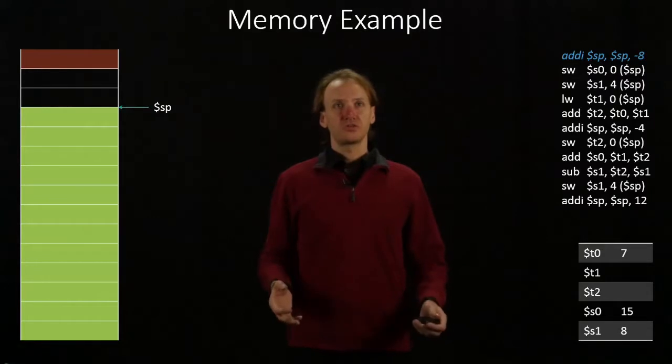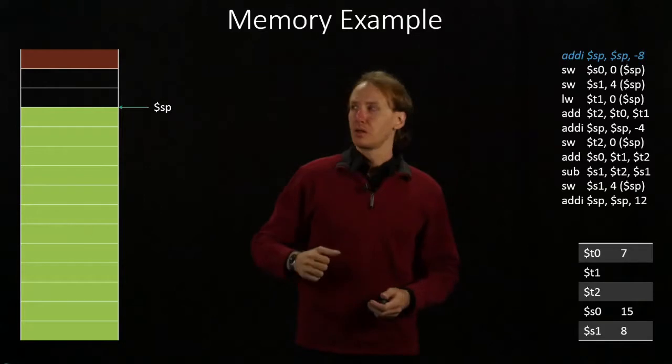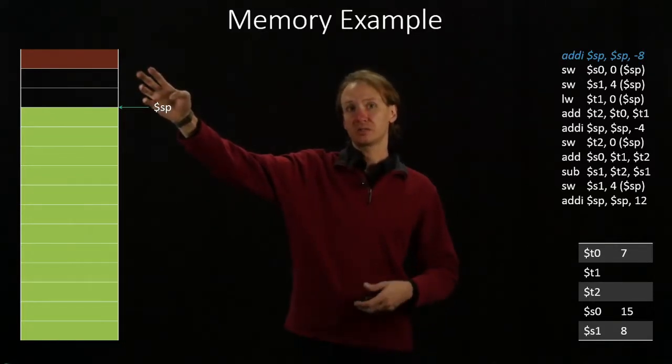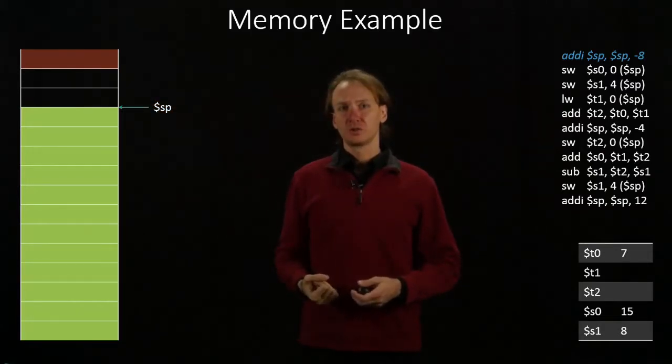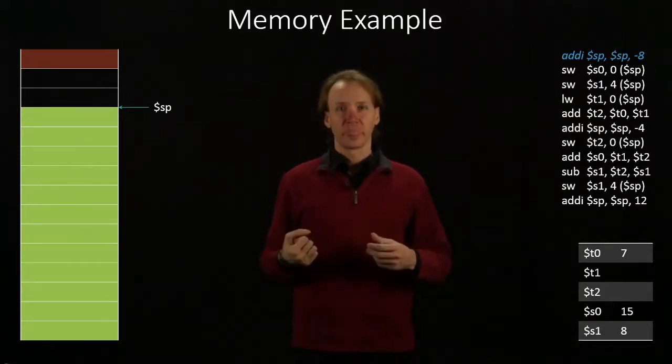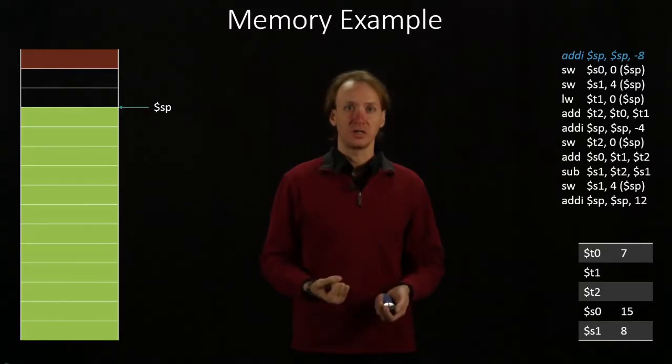So the first instruction I have says that I should subtract 8 from my stack pointer. So this has the effect of declaring 8 bytes of memory as allocated now. It's been allocated for me, so it's not being used by somebody else and it's not considered unallocated memory. So this memory is useful for me. I can take this. I can do whatever I need with it.